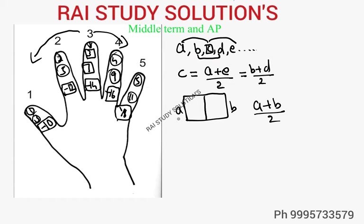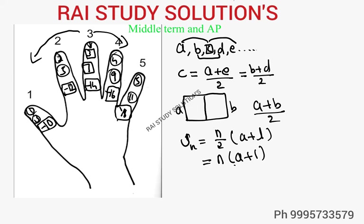Now let's find the relation of the middle term with the sum of an arithmetic sequence. The formula for the sum is S = n/2 × (a + l), where a is the first term and l is the last term. You can rewrite this as S = n × (a + l) / 2. And (a + l) / 2 — first term plus last term divided by 2 — is exactly the middle term.